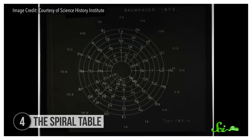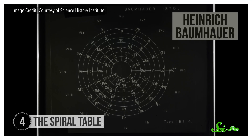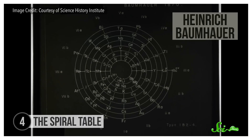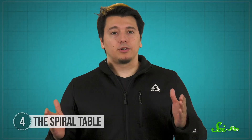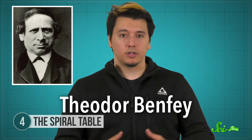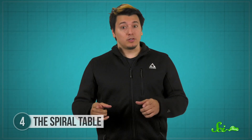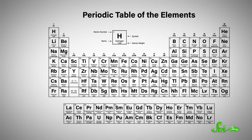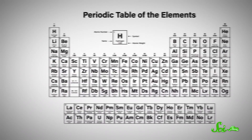In 1870, German chemist Heinrich Baumhauer constructed a 2D table that's much easier to read and store than a rotating cylinder. It was expanded nearly a century later by Theodore Benfey, with more elements and more colorful labels to aid interpretation. Supporters argue that the key feature of a spiral table is that it's continuous. Look at the standard table, and you might think that chlorine and argon have much more in common than, say, argon and potassium — after all, they're right next to each other.